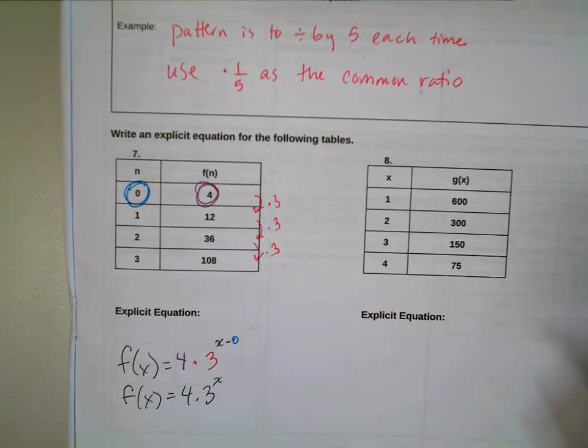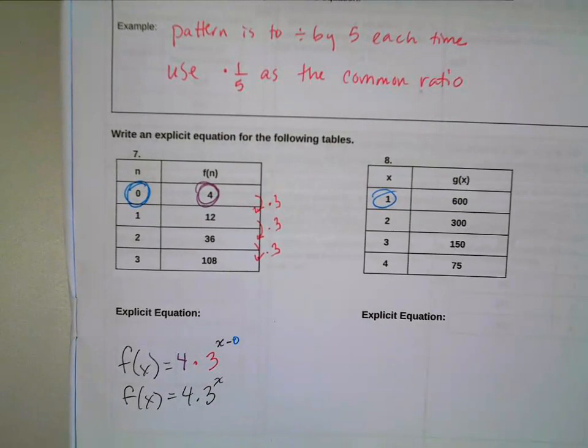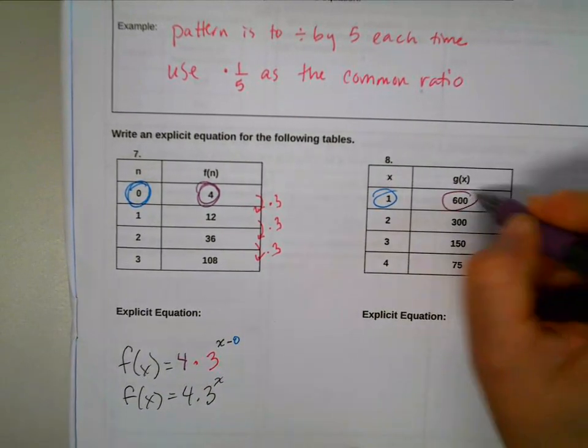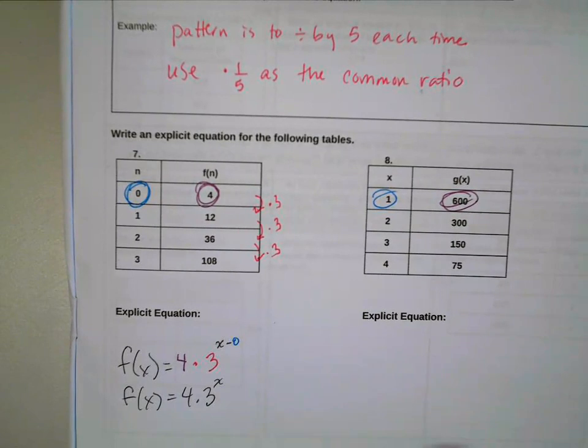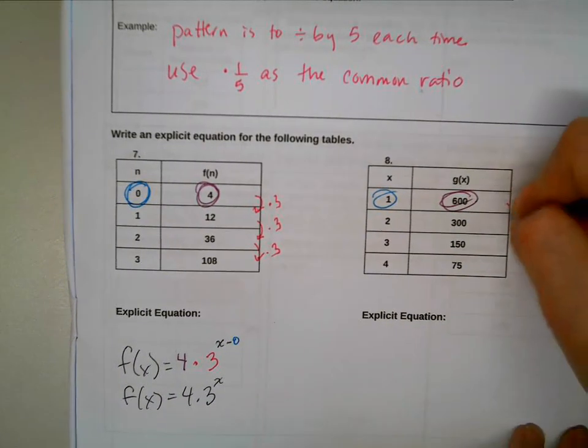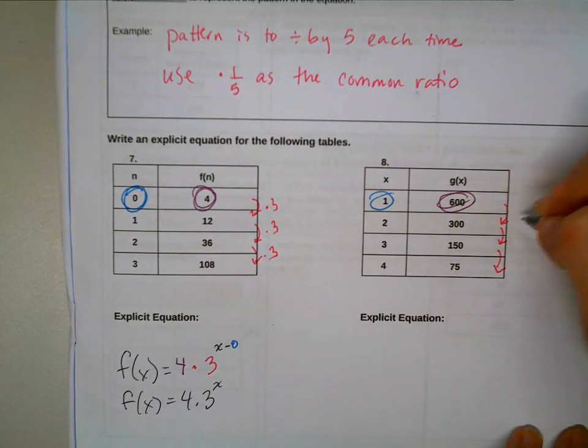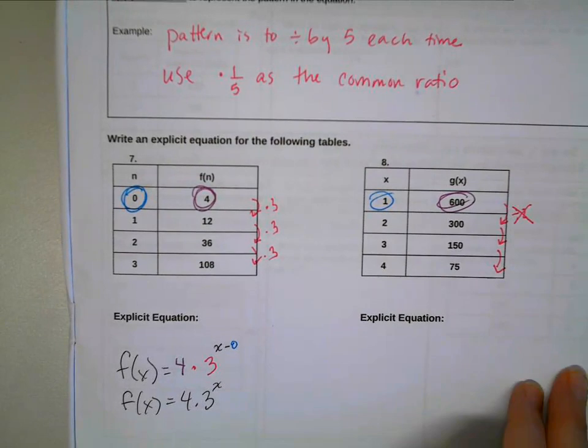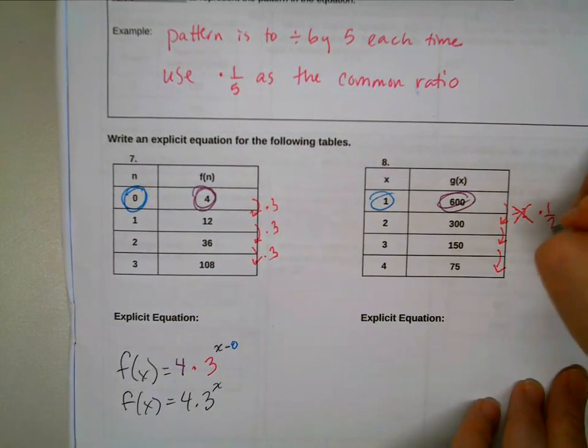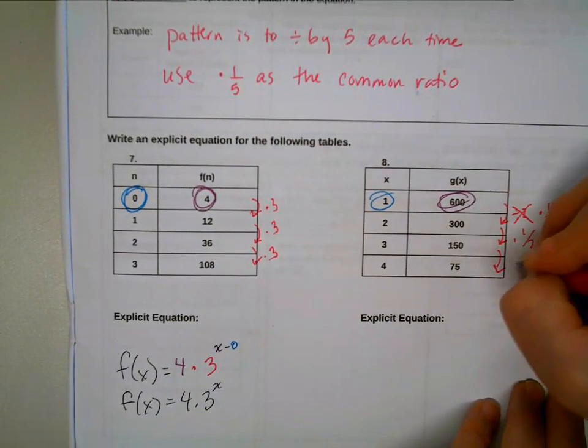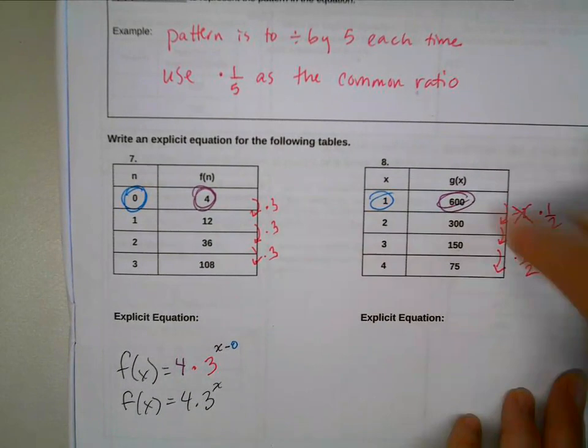Over here, my starting input is a one, my starting output is 600. What's that going to tell us about our common ratio? It's getting smaller, right? So I am going to divide by two, but we won't do that right? Instead of divide by two, I'm going to write that as times one half each time, times one half. So those are my three numbers.